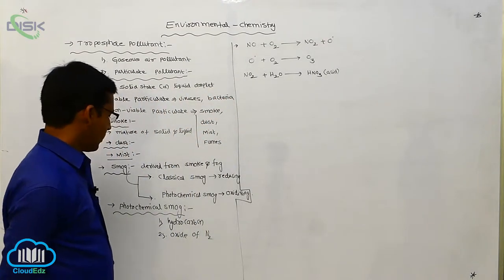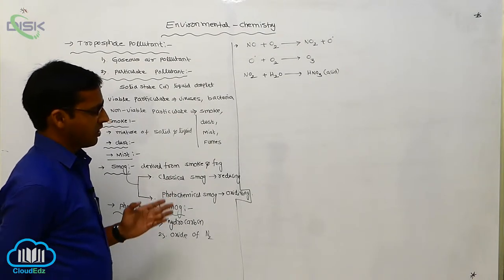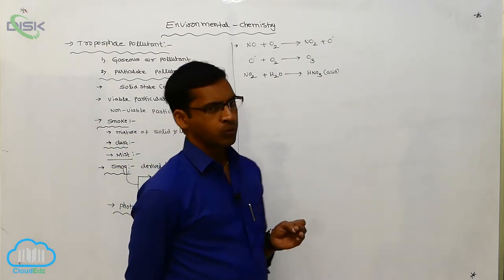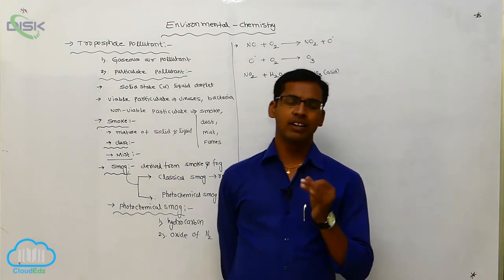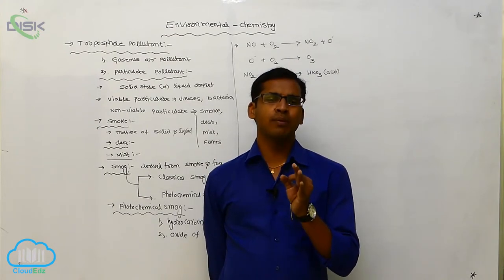Now, these oxides of nitrogen, this is your chain reaction that takes place. Here, NO and NO2, nitric oxide and nitrogen dioxide, are the primary source of photochemical smog.